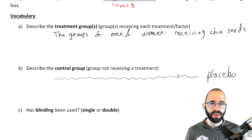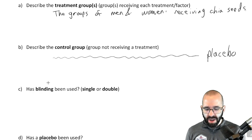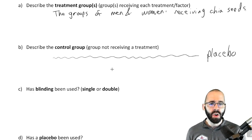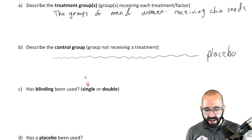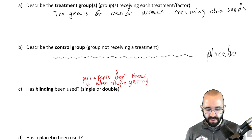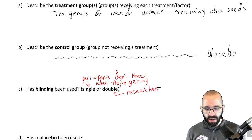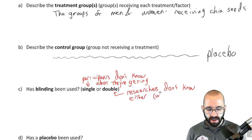Has blinding been used? We haven't talked about that yet. Blinding is basically where people don't know what's happening. Single blind means the participants don't know what they're getting. Double blind means neither the participants nor the researchers know either, when looking at the data.